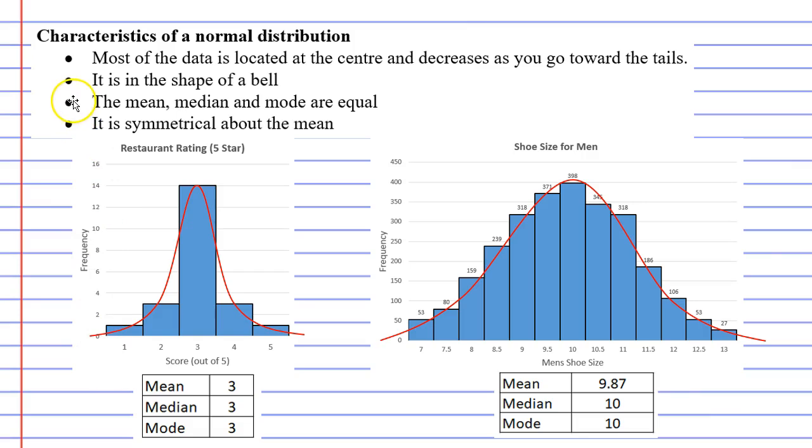The third dot point, which we haven't discussed yet, is that the mean, the median, and the mode are all equal. If we look at the graph on the left, the mean, the median, and the mode are all equal. They're not just equal, they also represent the peak of our graph. Notice that the mean, median, and mode are 3. And if I draw a line at this point, this is actually our axis of symmetry.